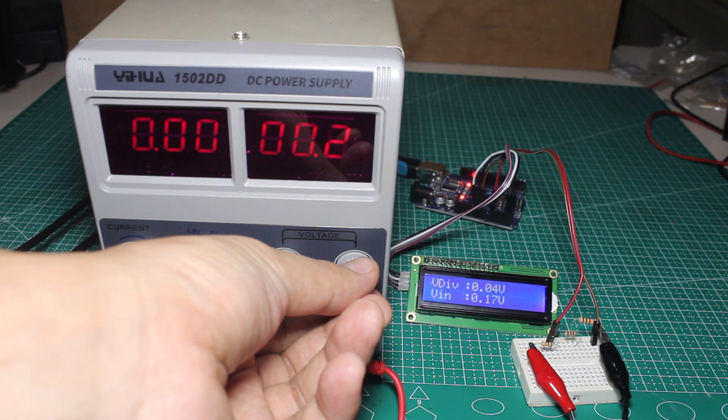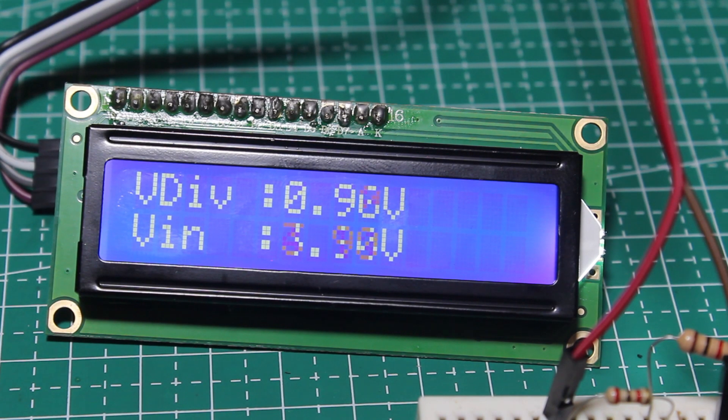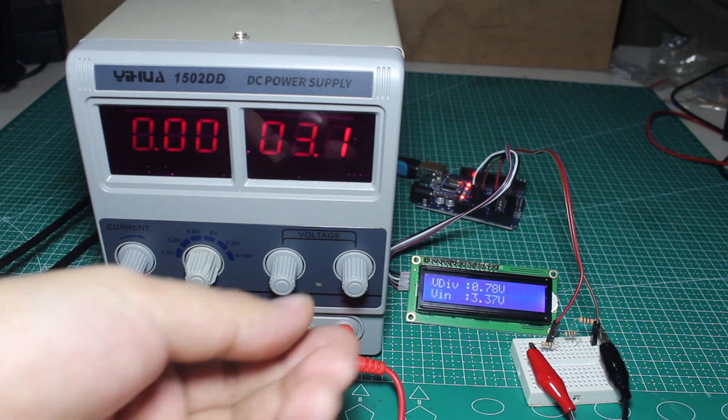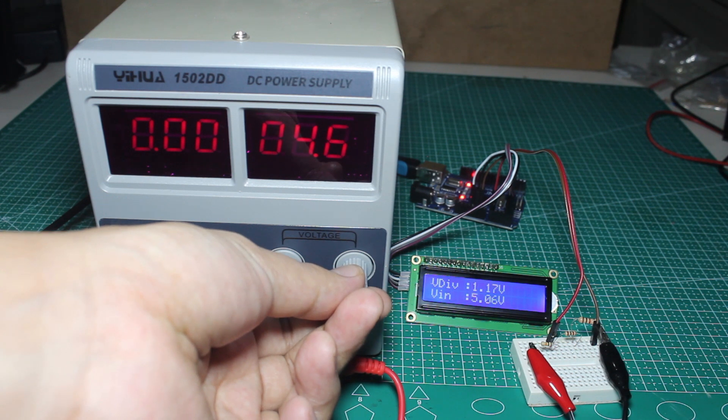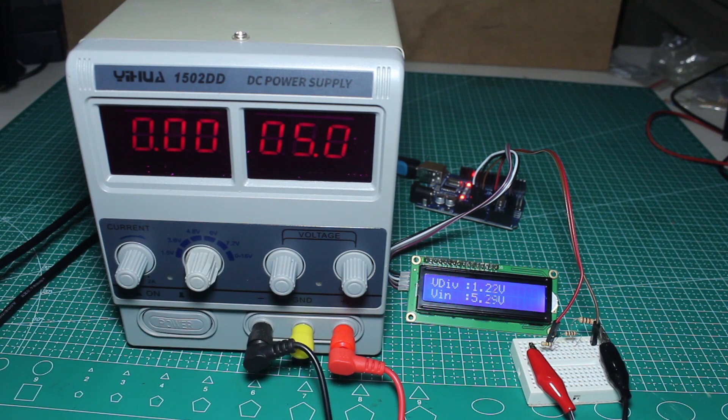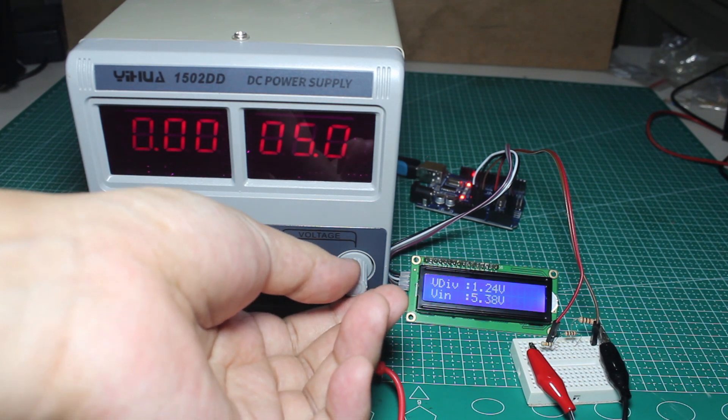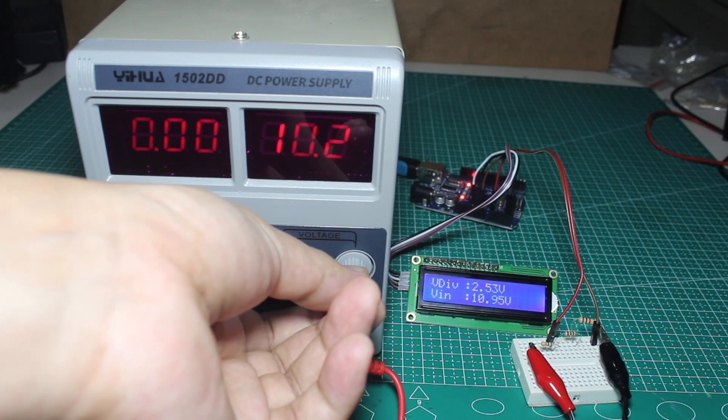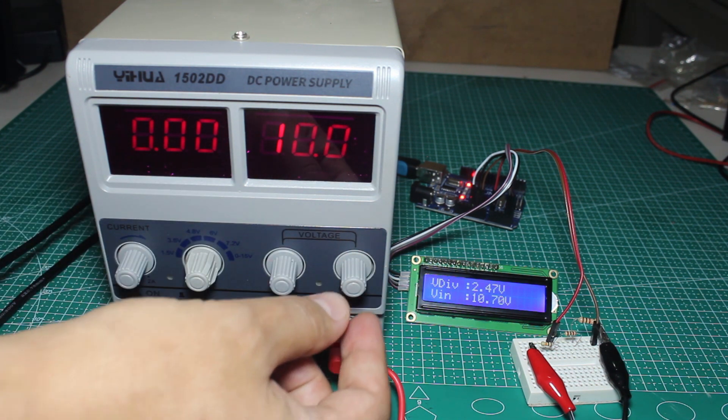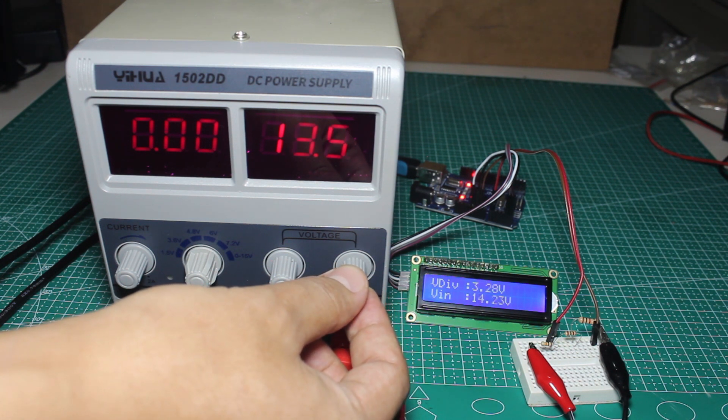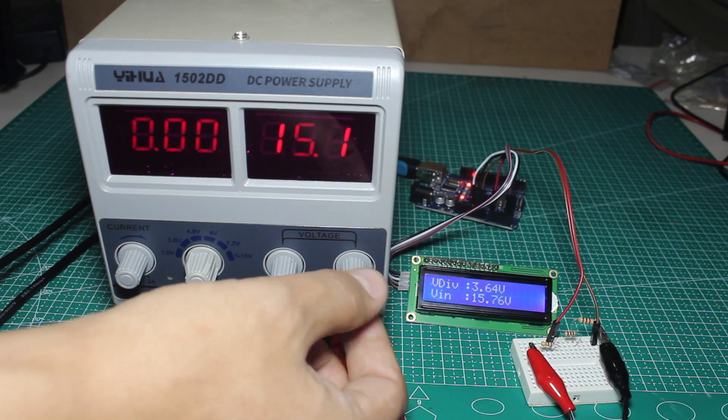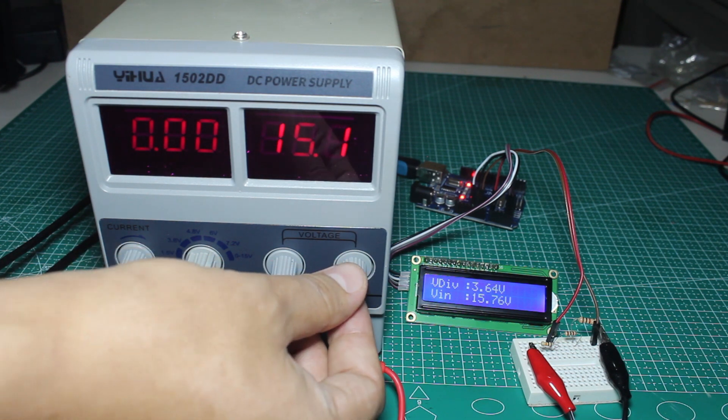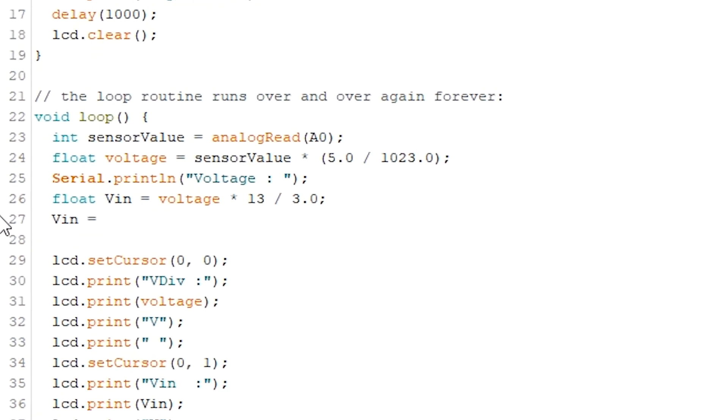Now I'll try to adjust the voltage output of the power supply and compare the voltage displayed on the LCD. Now you can see the voltage output of the power supply is about the same as the voltage printed on the LCD. And if you think the voltage on the LCD is slightly inaccurate, you can do the calibration by multiplying the value with some number.